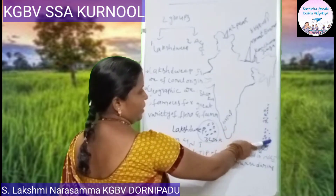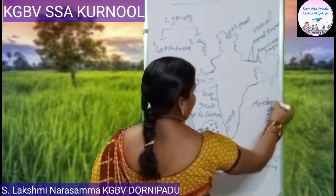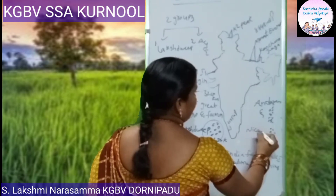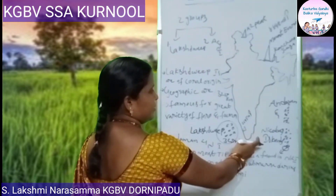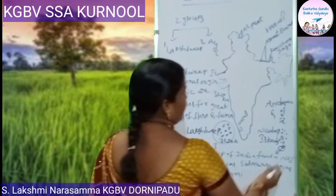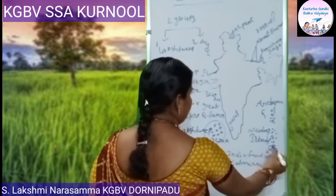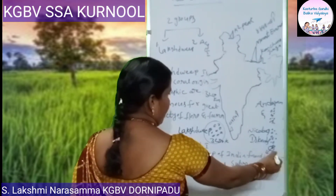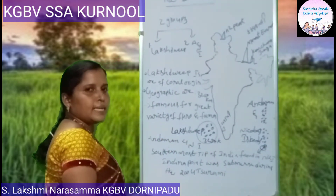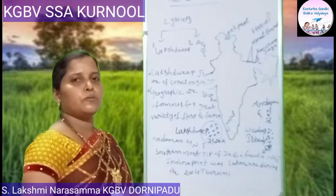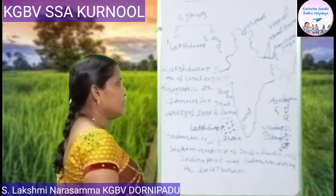Now let us see the Andaman and Nicobar Islands. These are located to the east direction of India. In the upper part are the Andaman Islands, and in the lower part are the Nicobar Islands. The southernmost tip of India is found in the Andaman and Nicobar Islands, and it is also called Indira Point. Indira Point was submerged during the 2004 tsunami. These two island groups are very important to our country.